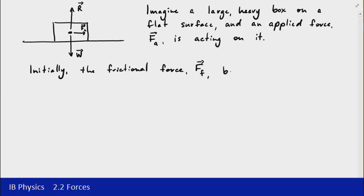So it balances FA. What that means is that it's going to be equal and opposite. So it's going to be the same magnitude but in the opposite direction. And the reason for that is that that applied force isn't yet great enough to cause the box to actually move.